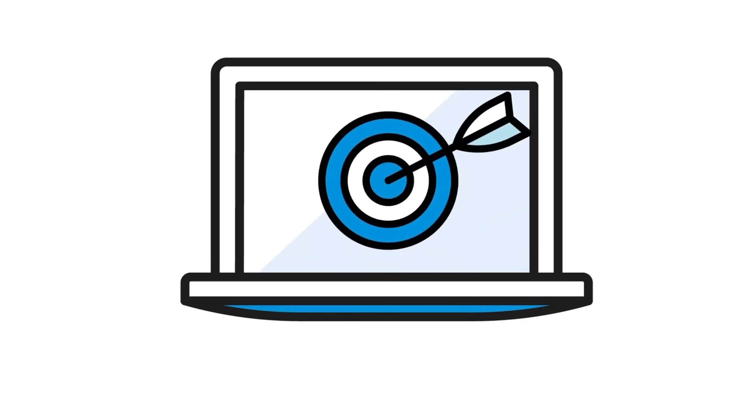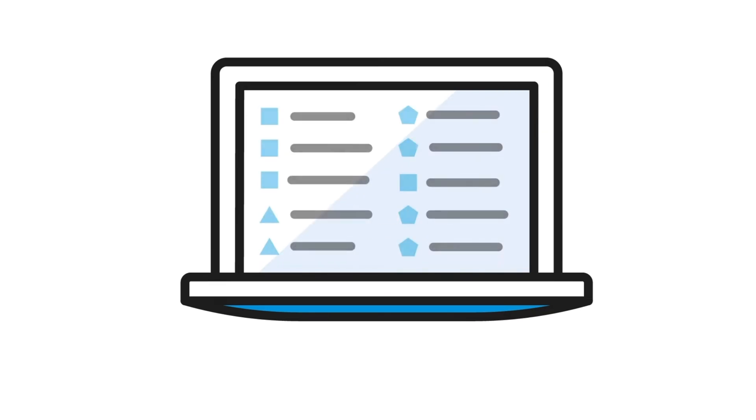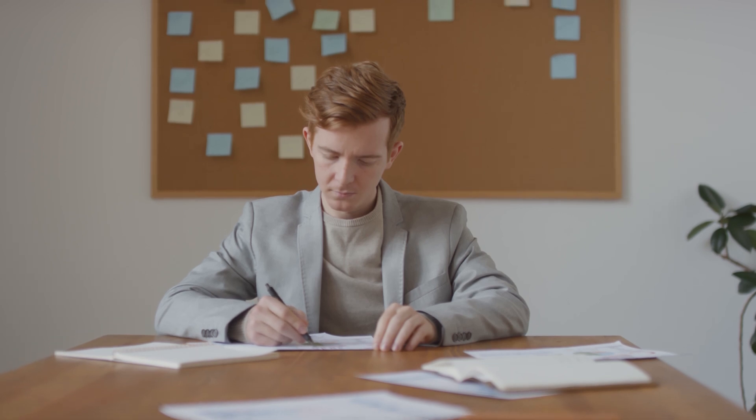First up, master the clock, master the module. The digital SAT is an adaptive test. This means your performance on the first math module determines whether you get an easier or harder second module. Getting to that harder module is crucial if you're aiming for a top score. So how do you do that? You don't just race through. You play it smart. Your goal in module one isn't speed, it's accuracy. This is where you need to invest your time to lock in as many correct answers as possible.